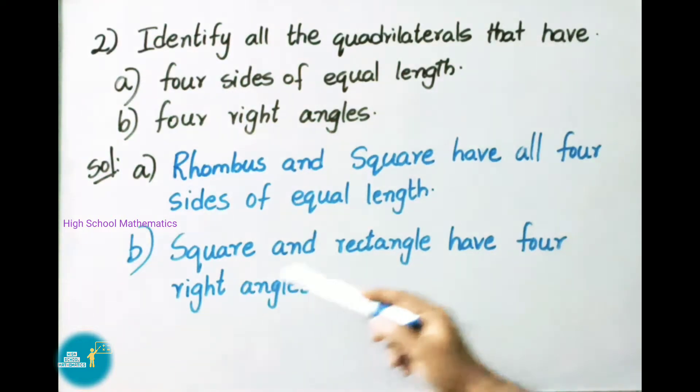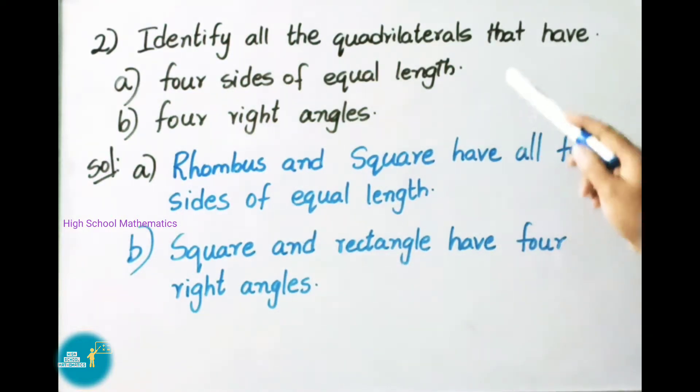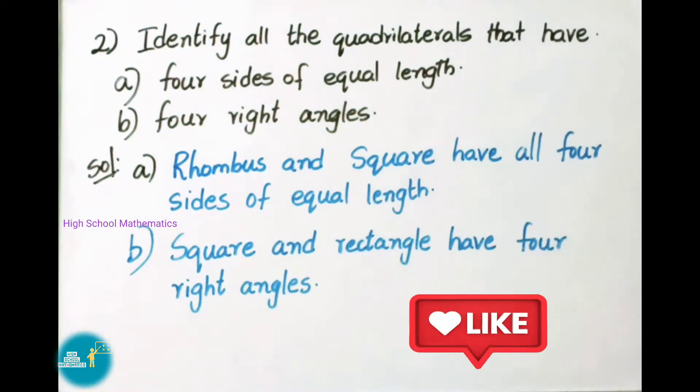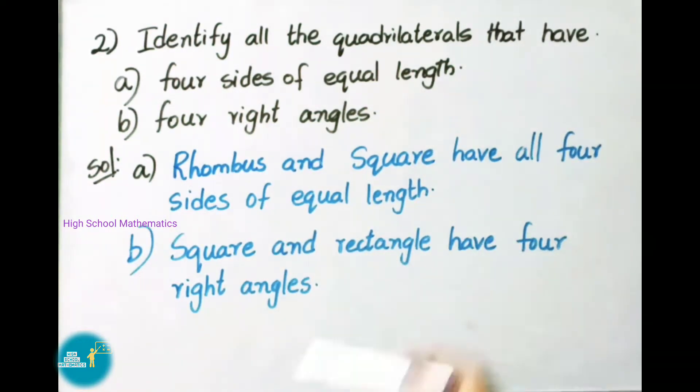Question B: Squares and rectangles are the quadrilaterals that have 4 right angles.